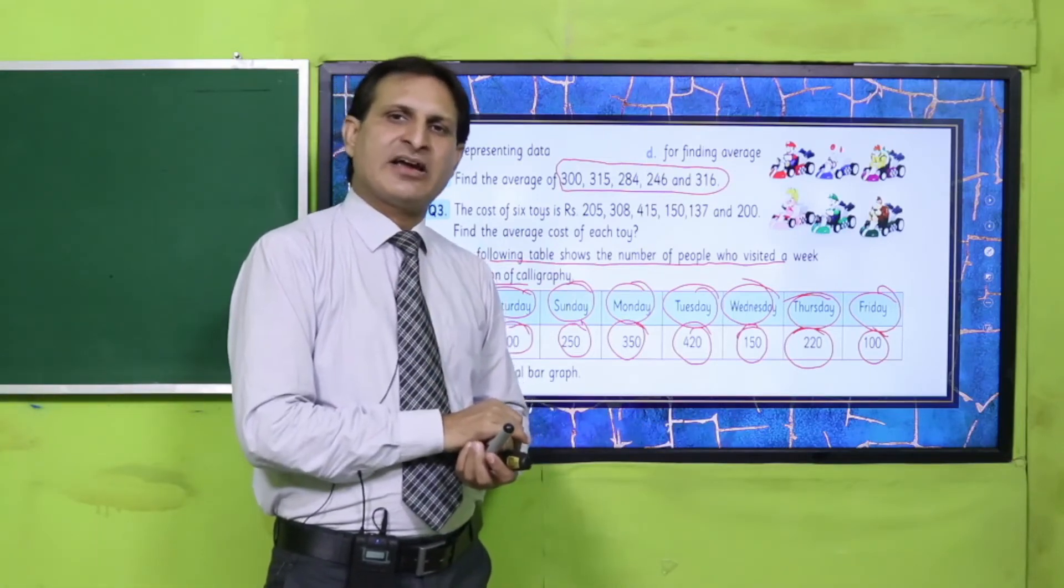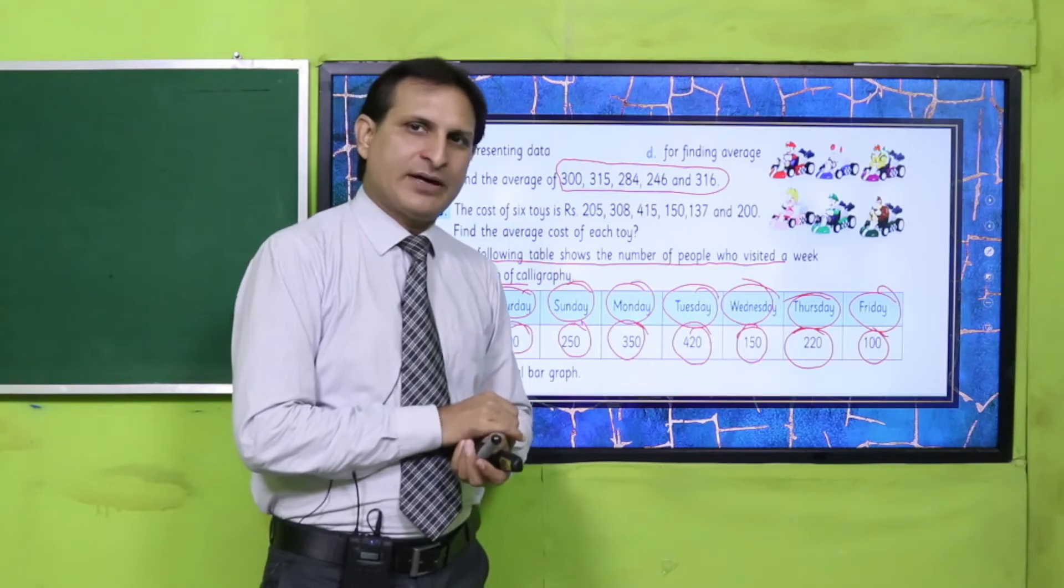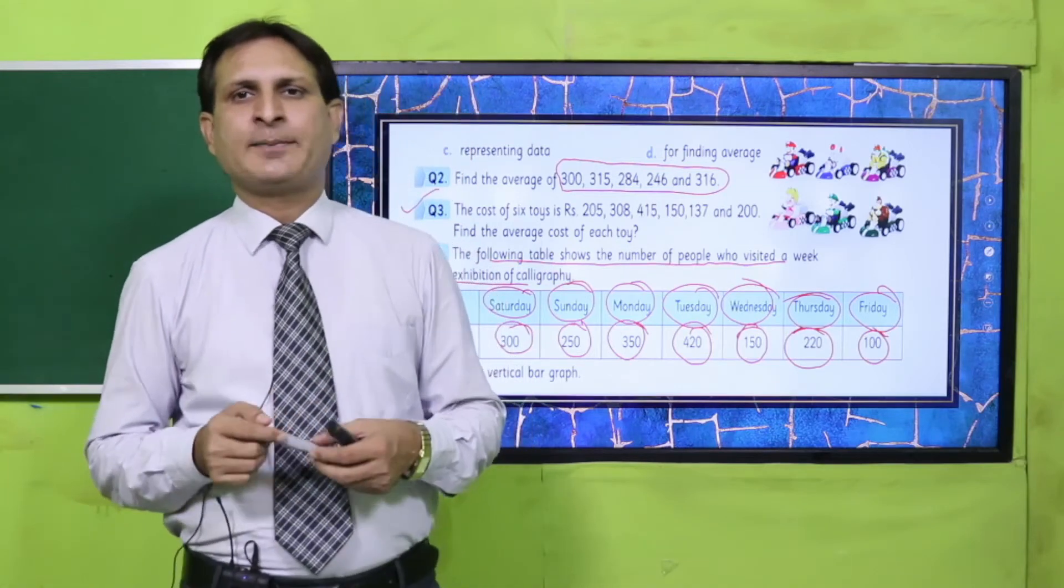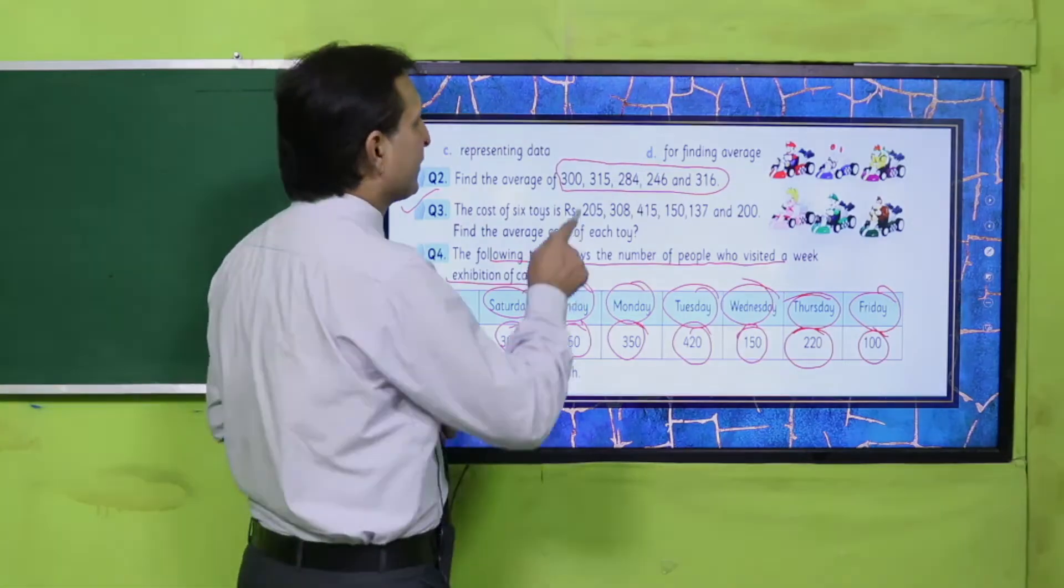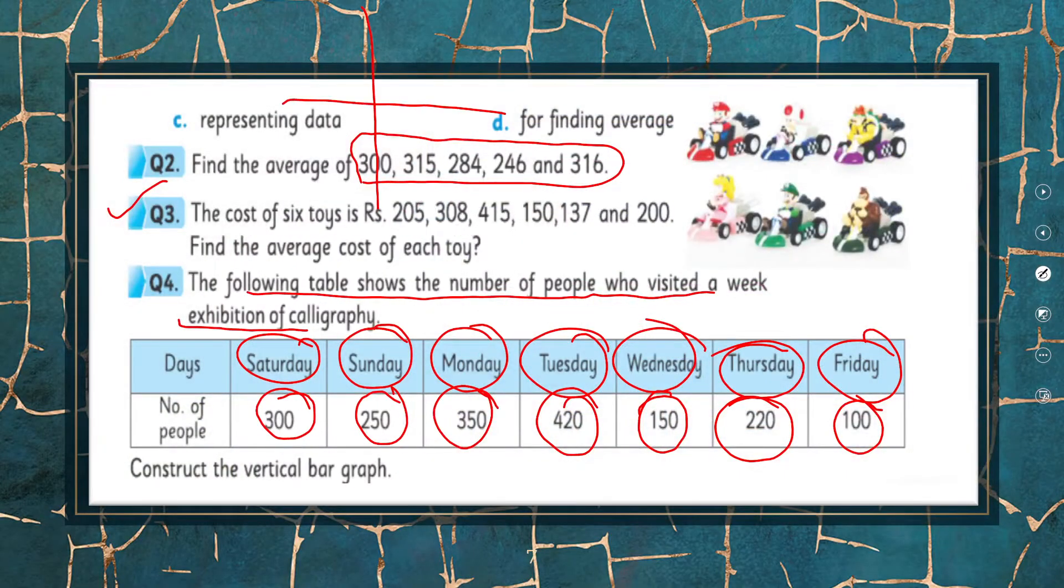You have to construct a vertical bar graph. I have explained the methodology to you: draw a vertical axis and horizontal axis. The bars are on the horizontal axis and the numbers or numerical data labels are on the vertical axis.